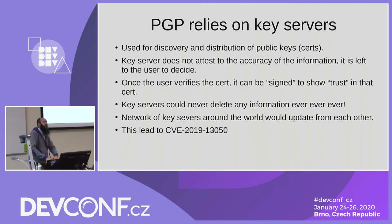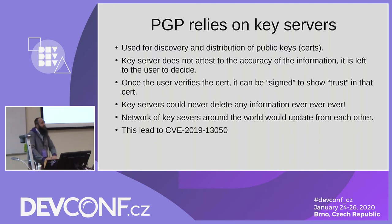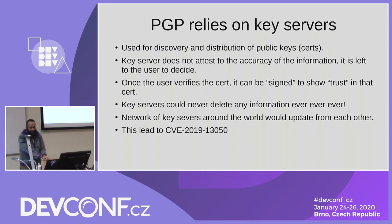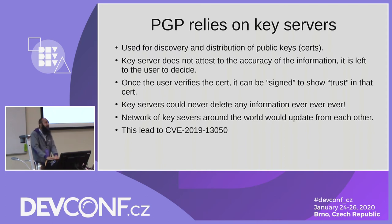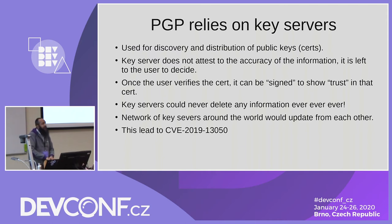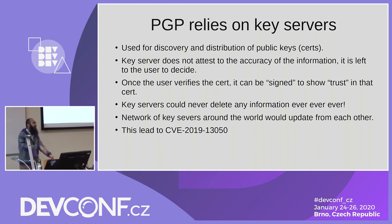There are a lot of key servers on the internet. You may have heard of pgp.mit.edu, probably the most commonly used. There are hundreds of key servers on the internet. The basic principle is that you use the key server for discovery and distribution of public keys. The key server does not attest to the accuracy of the public key — it will not tell you that this public key indeed belongs to the person who uploaded it. That decision is left to the user. Trust is achieved by signing people's public keys and tracing back to somebody you trust.